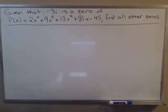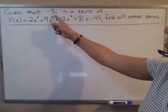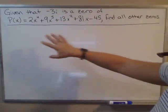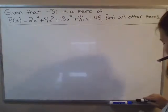Given that -3i is a zero of P(x) = 2x^4 + 9x^3 + 13x^2 + 81x - 45, find all the other zeros.